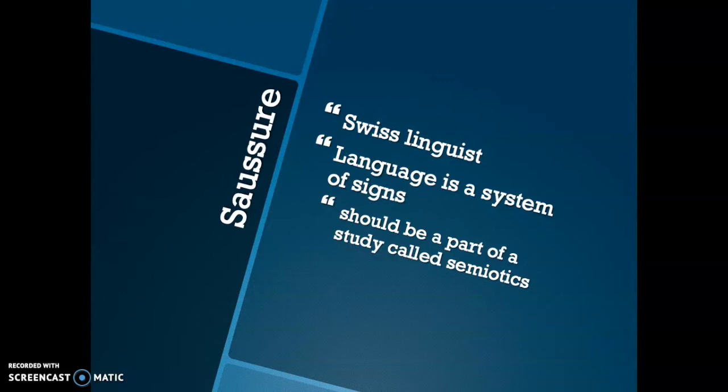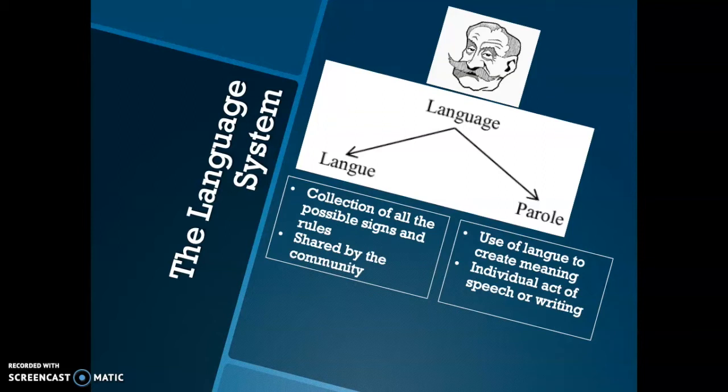So what he said was that language has two components: the lang and the parole. The lang is basically the collection of all the possible signs and rules in language — all your spellings, all the words, verbs, nouns, proverbs, adjectives — the collection of all of these together is the lang. This is what is shared by a community, so all English-speaking people know all of these rules. Now parole is the use of the language to create meaning, so any individual act of speech or writing is the parole.